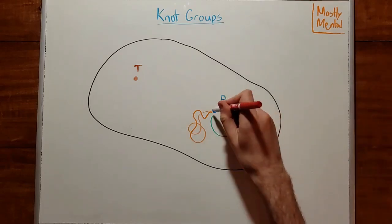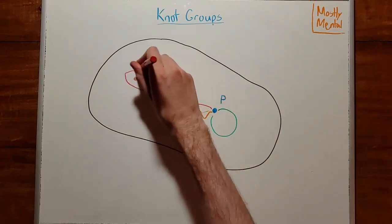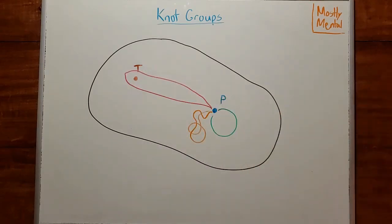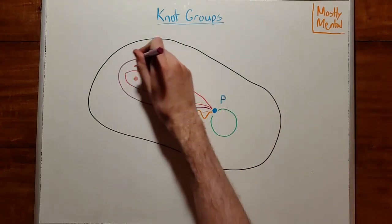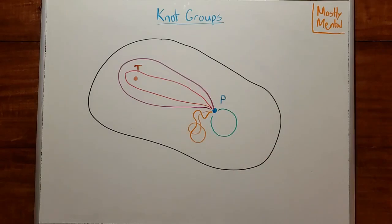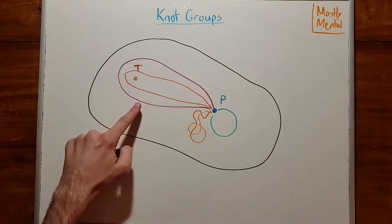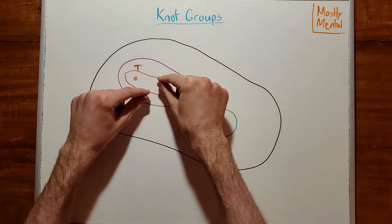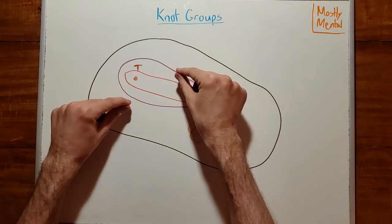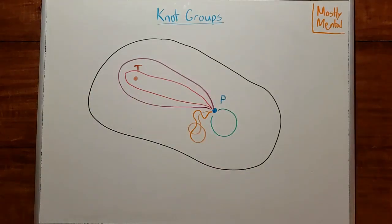Or it could walk in a loop around the tree. Or it could take a slightly wider loop around the tree. But are those really different paths? I mean, these two loops around the tree feel a lot alike. In fact, we could stretch this small one out into the big one, without ever leaving the park or passing through the tree.